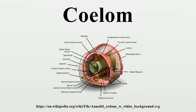Acoelomates lack a fluid-filled body cavity between the body wall and digestive tract. This can present some serious disadvantages: fluid compression is negligible, while the tissue surrounding the organs of these animals will compress. Therefore, acoelomate organs are not protected from crushing forces applied to the animal's outer surface. The coelom can be used for diffusion of gases and metabolites, but these creatures do not have this need, as the surface area to volume ratio is large enough to allow absorption of nutrients and gas exchange by diffusion alone, due to dorsal-ventral flattening.